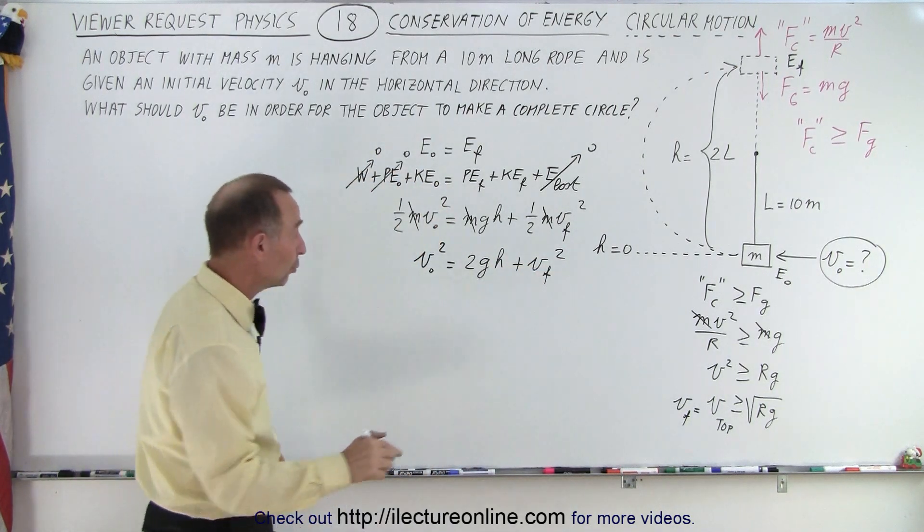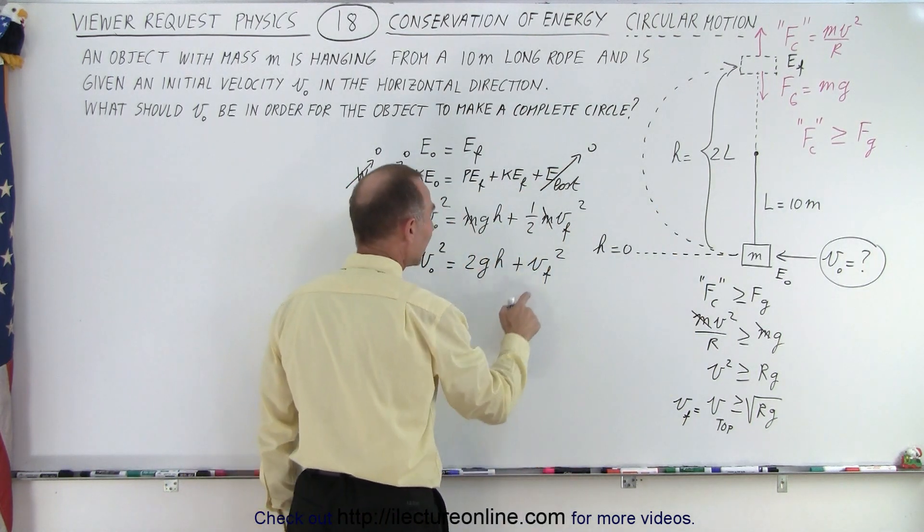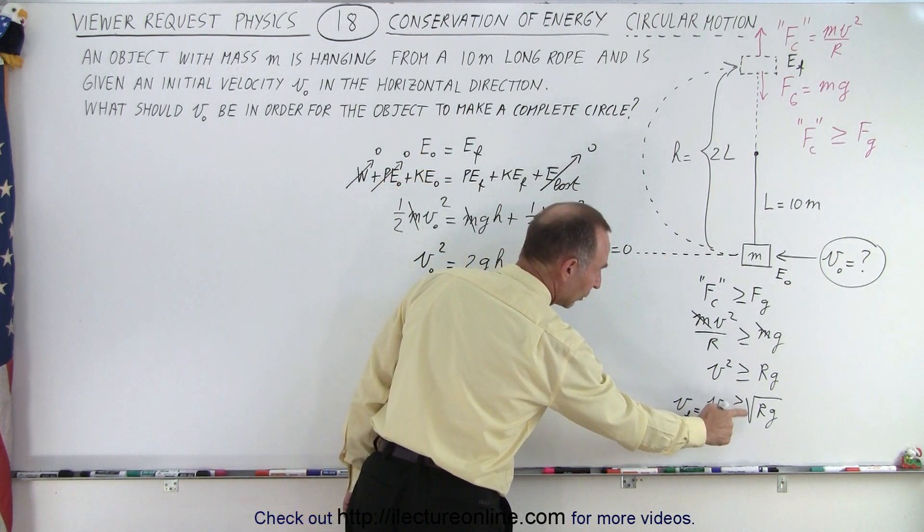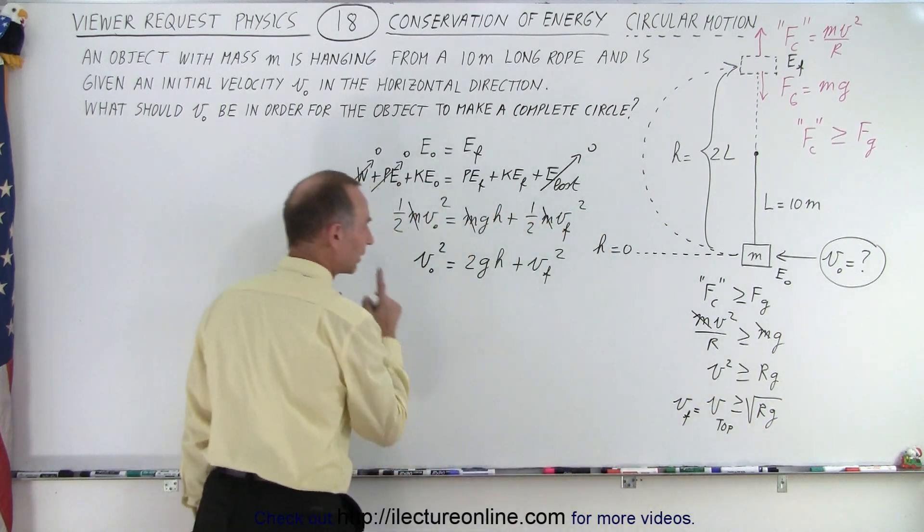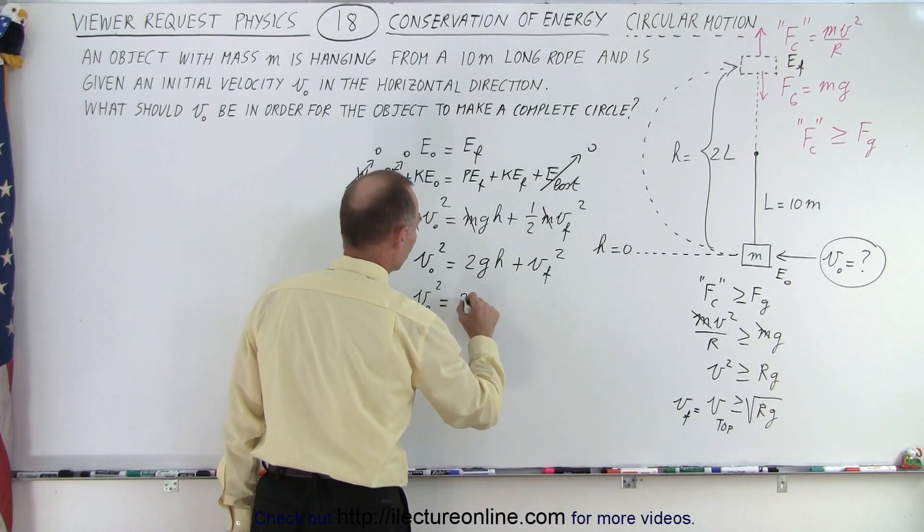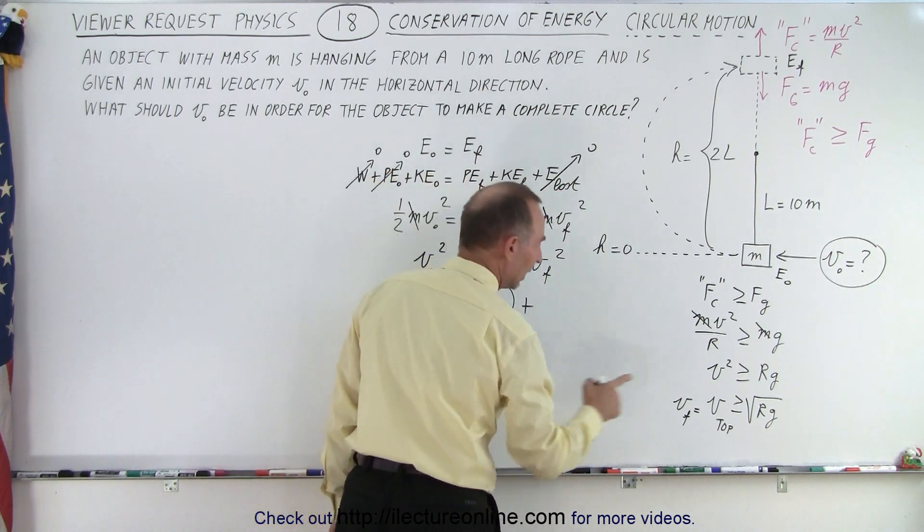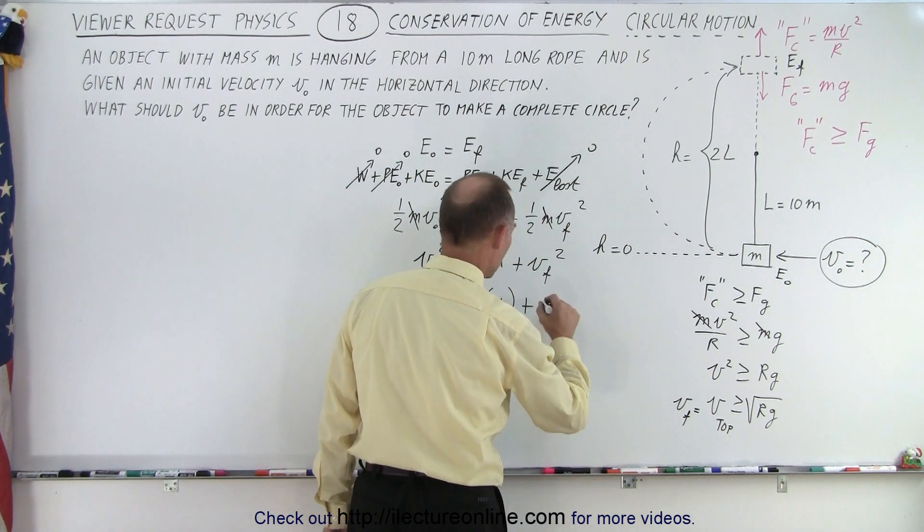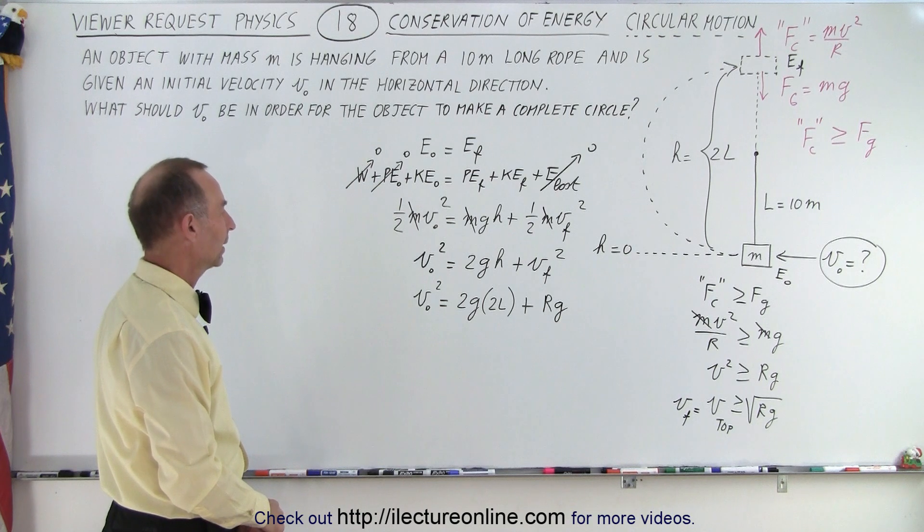And then we can substitute what H is equal to because H is equal to two times the length of the rope and V final squared, well V final right here is going to be greater or equal to the square root of RG but squared will be greater or equal to RG. Okay let's substitute. So we have V initial squared is equal to 2G and H will be two times the length of the rope plus V final and that would be V final squared so that would be equal to R times G.